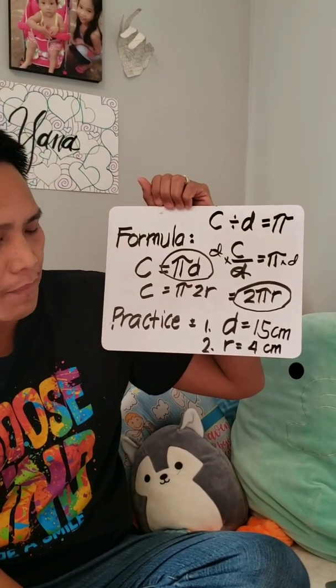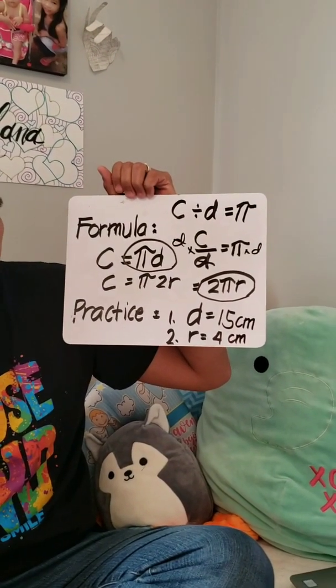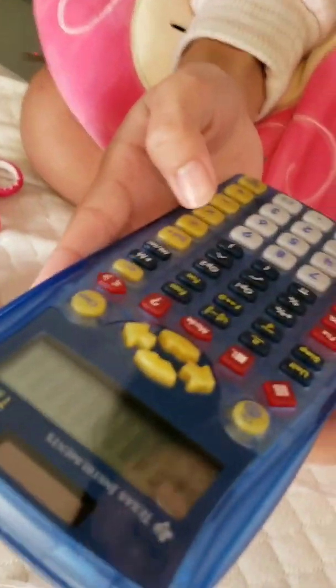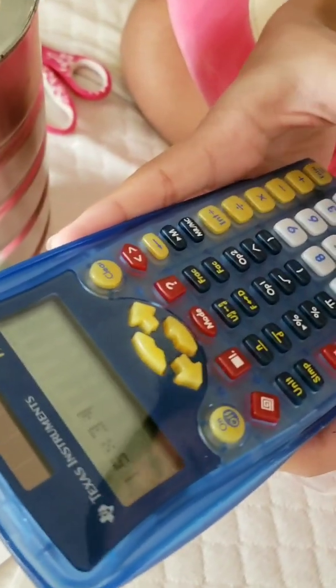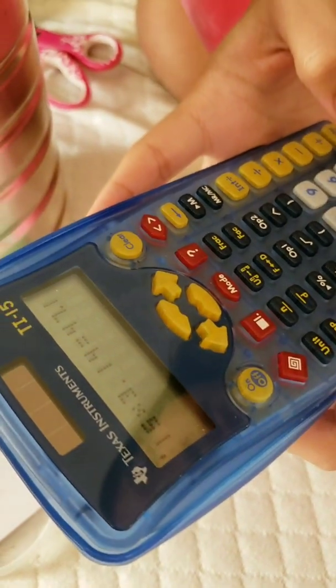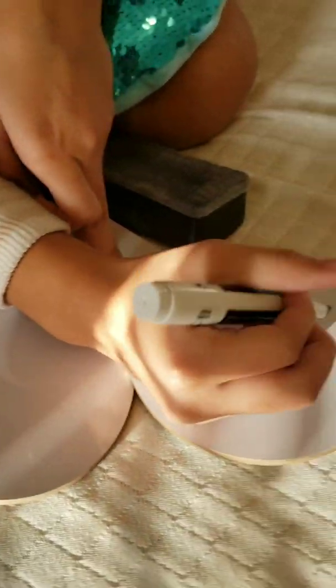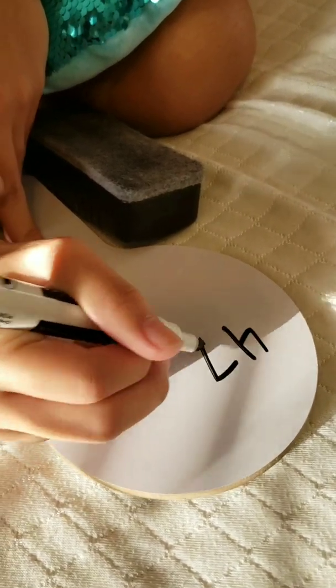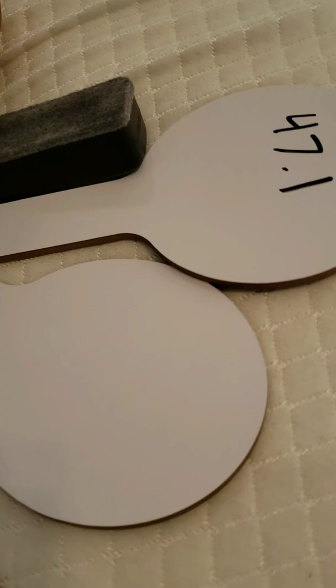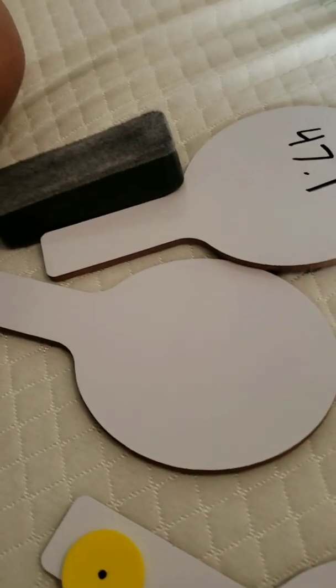First problem. If the diameter of a circle is 15 centimeters, compute for its circumference. 15 centimeters. 15 times 3.14. What's the answer? 47.1. You can round it off to the tenth place. 47.1 centimeters.